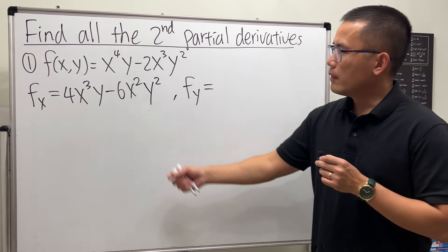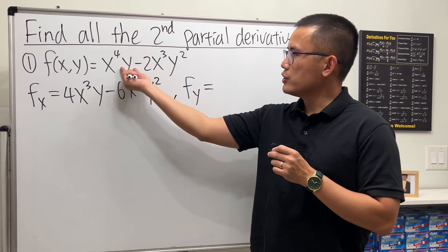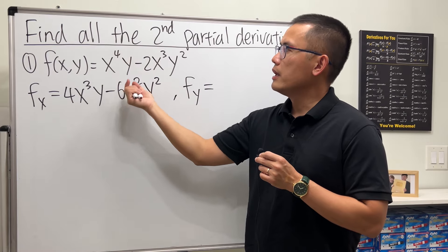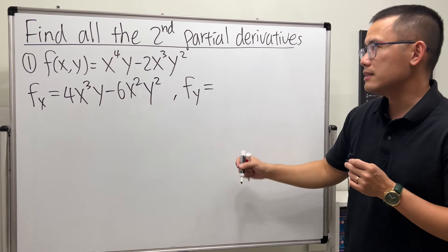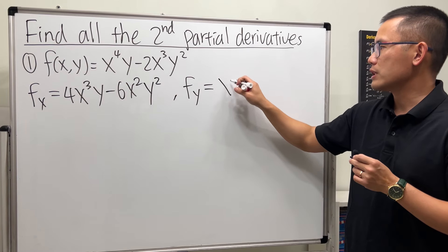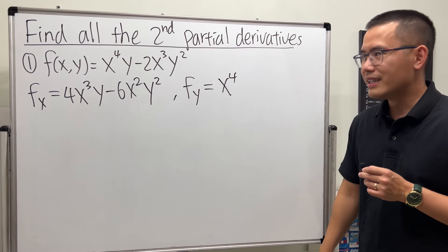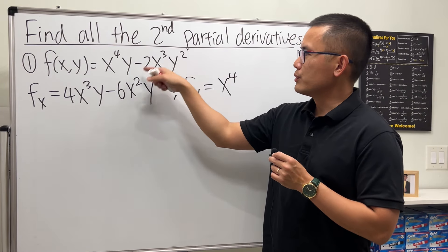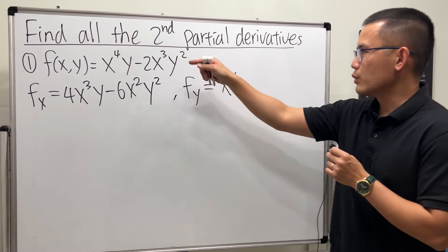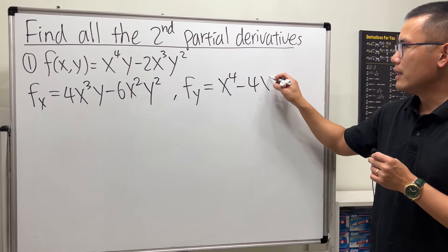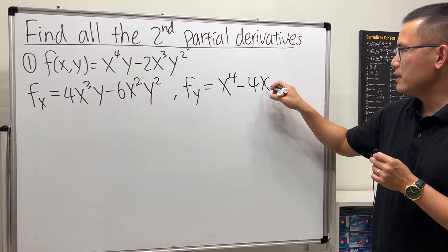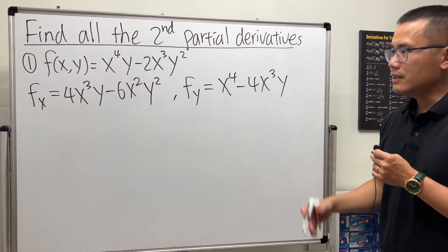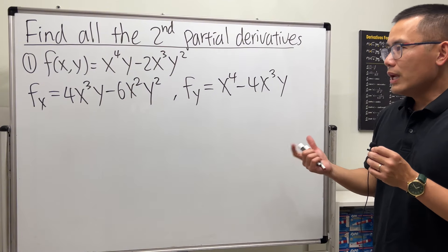Now let's get fy — the partial with respect to y. I will be differentiating y to the first power and that gives me one, then multiply by the constant x to the fourth power. Next, differentiate the second term: put the two to the front, giving minus 4, keep x to the third power, and y to the first power.